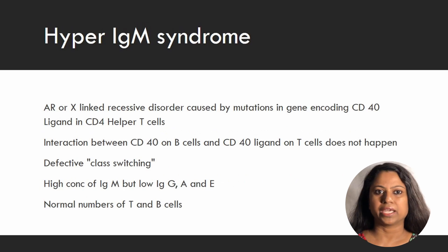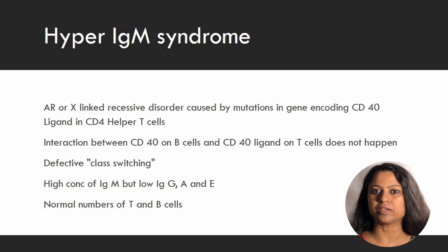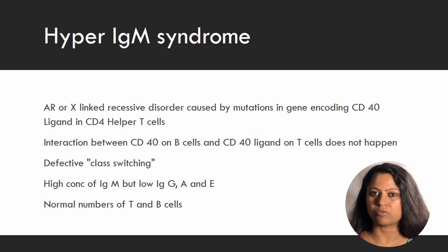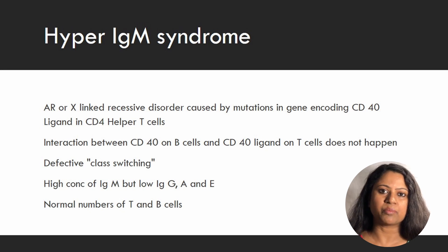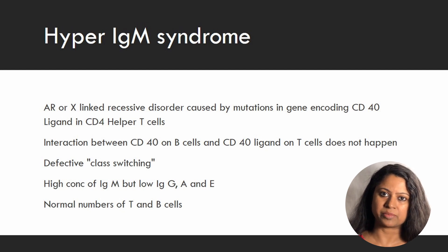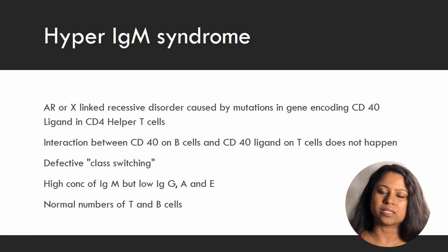Hyper-IgM syndrome is characterized by excessively high levels of IgM in the bloodstream, along with low levels of other immunoglobulins like IgG and IgA. The defect is in the gene that codes for CD40 ligand, which is present on the surface of CD4 helper T cells. This ligand interacts with CD40 on B cells, and this interaction is important for class switching — the conversion of IgM to other serotypes like IgG and IgA. The defect leads to recurrent pyogenic infections, and some people may be at increased risk of autoimmune disorders and cancers.